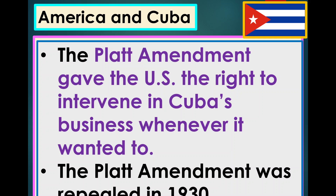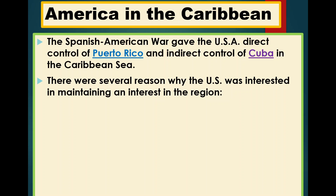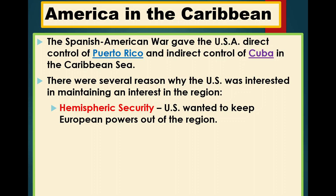The Platt Amendment gives the U.S. the right to intervene in Cuba's business, and the United States holds control of Cuba after the Spanish-American War until 1930. The Spanish-American War also gives the U.S. direct control of Puerto Rico and other areas in the Caribbean Sea. The United States wants to control these islands to create a sphere of influence, giving them hemispheric security — by controlling all areas in the Caribbean, the United States can push out any foreign influence.